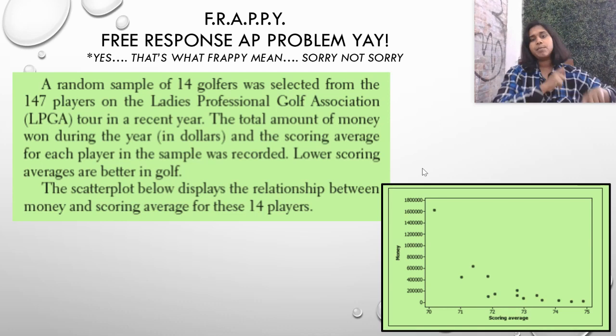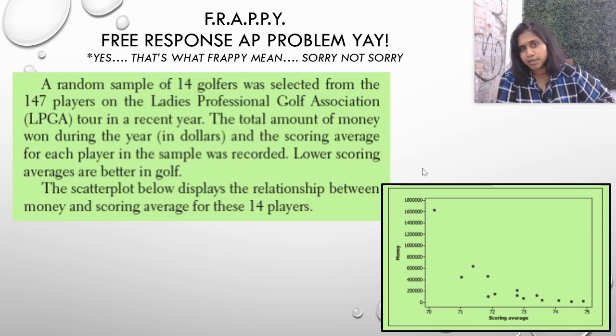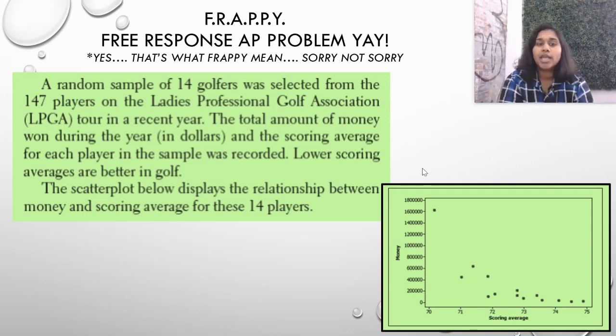A random sample of 14 golfers was selected from 147 players on the Ladies Professional Golf Association, the LPGA Tour, in the recent year. The total amount of money won during the year in dollars and the scoring average for each player in the sample was recorded. Lower scoring averages are better in golf. That's good to know. I kind of knew that. The scatterplot below displays the relationship between money and scoring average for these players.